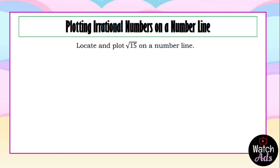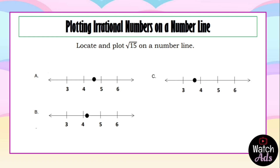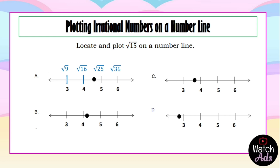Our last example: locate and plot the square root of 15 on a number line. 3 is the square root of 9, 4 is the square root of 16, 5 is the square root of 25, and 6 is the square root of 36. Now, 15 should be close to 16 because it is just one unit less than 16. So we find the number between 3 and 4, and our answer is letter C.